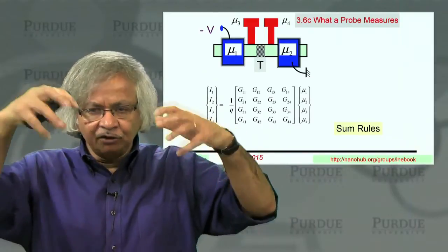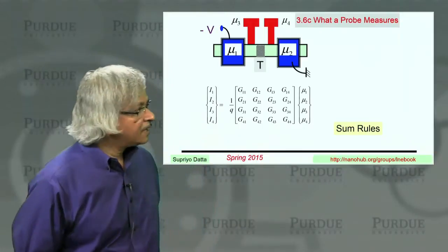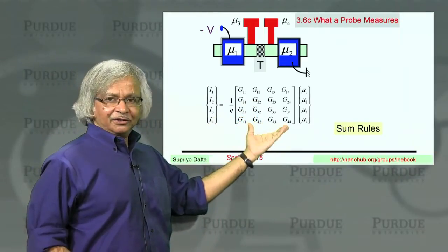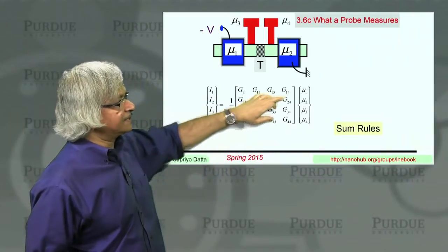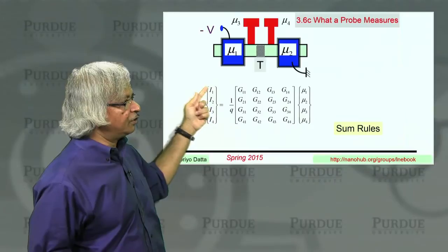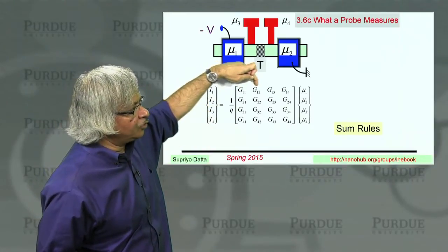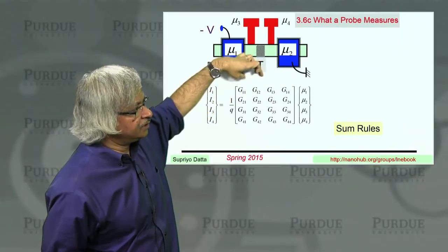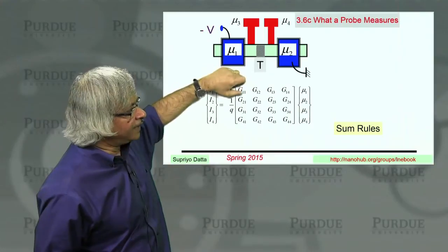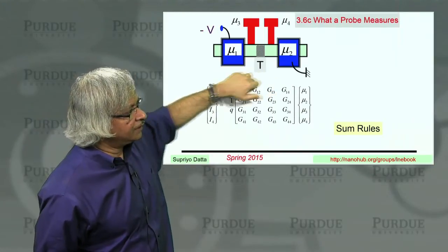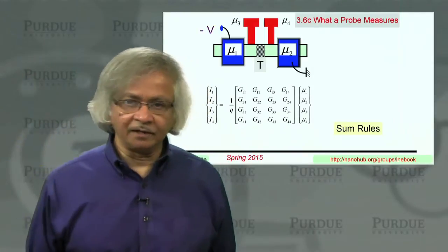You know, if you have 4 contacts and you put the same potential on all of them, no current flows. But in order to make sure that your equations know that, what must happen is, if I put the same number here, I should get 0. The only way to ensure that is, if every row adds up to 0. So these 4 things must add up to 0. The next row must add up to 0. The next row must add up to 0, and so on. So that's one of the sum rules. All rows must add up to 0.